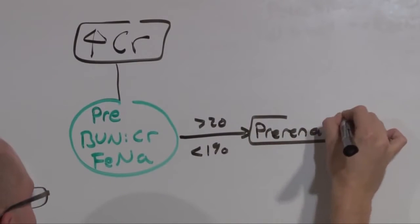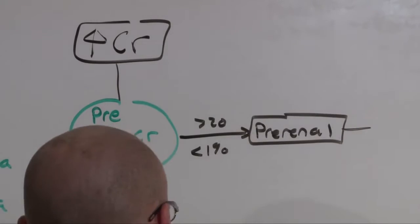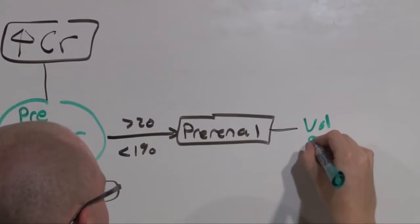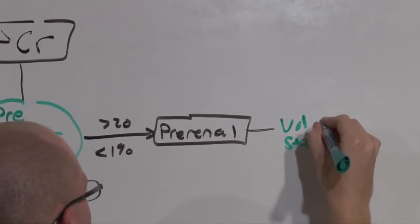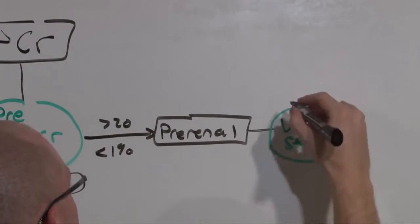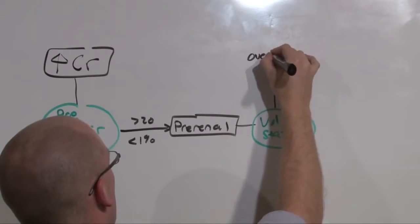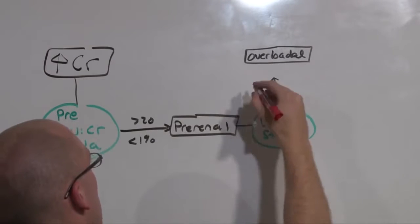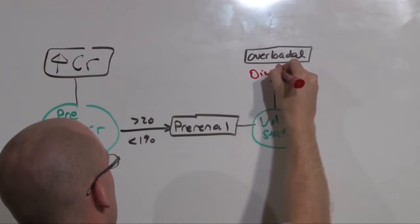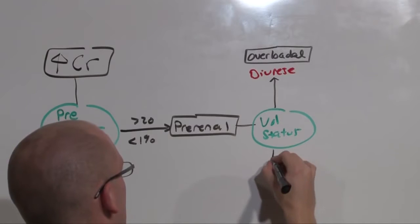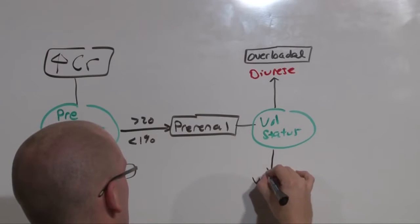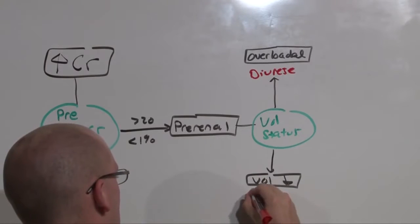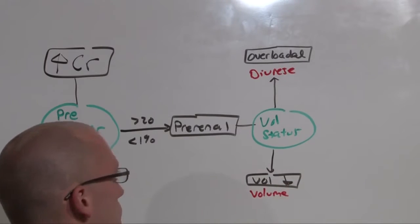Now, one of the major mistakes people make is they say, well, it's pre-renal, so they need volume. Wrong. If it's pre-renal, you need to decide what their volume status is. Because if they are volume up, that is, they're overloaded, you do not want to give someone whose volume overloaded more fluid. You want to diurese them. If they are volume down, then you do want to give them volume, and some intravenous fluids is a good idea.